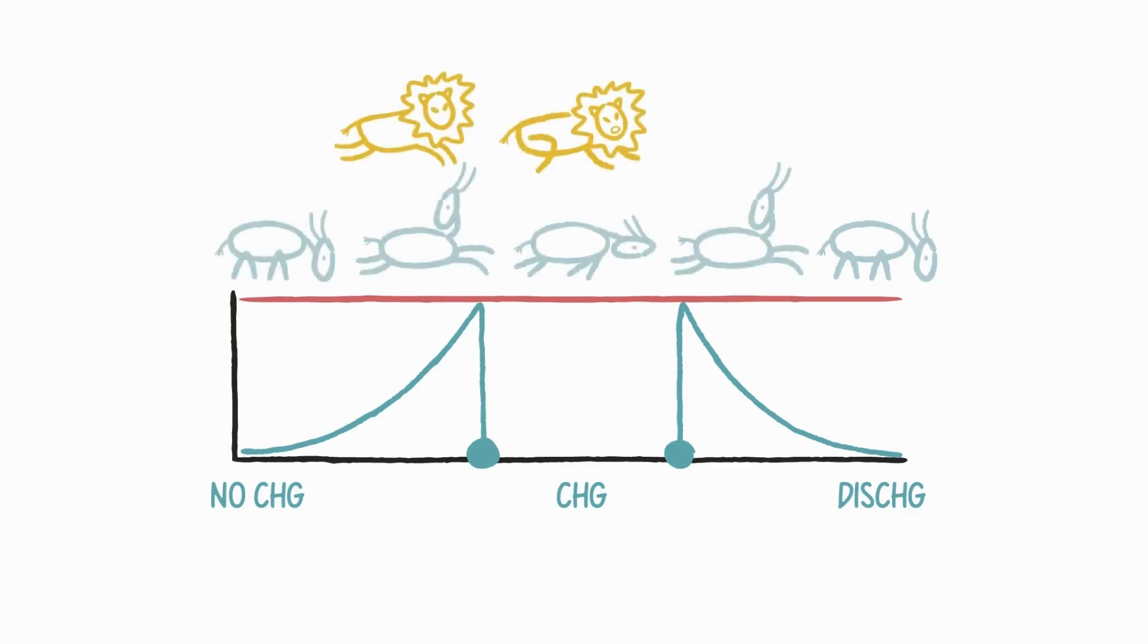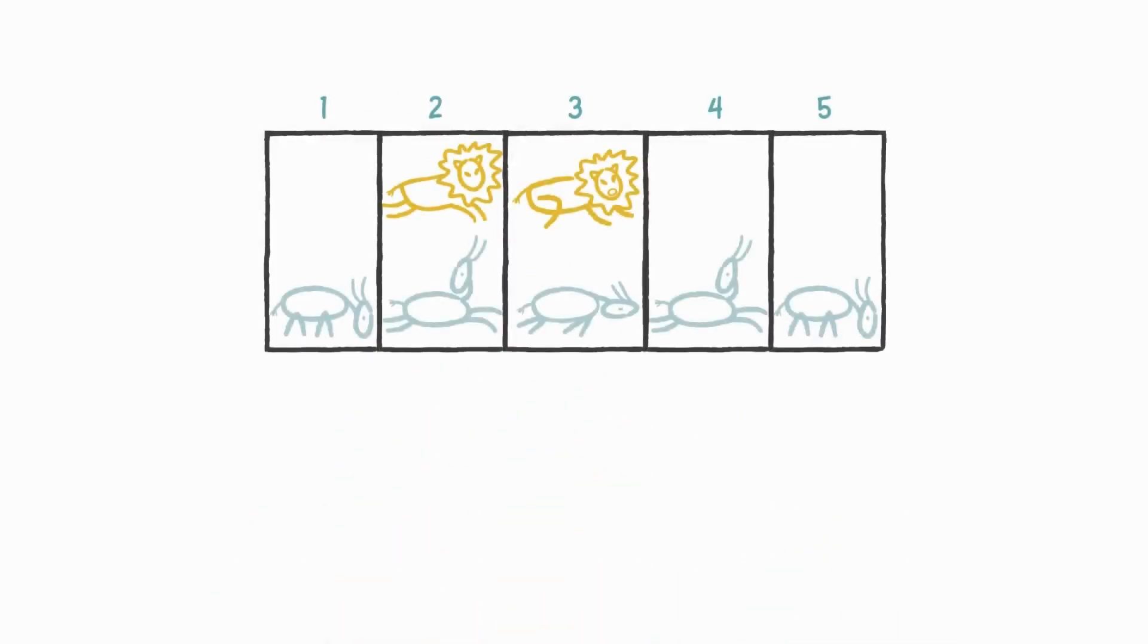But humans are different. Unlike animals who instinctively react to danger and move on, humans have a more complex process due to our more developed human brain. Imagine if the gazelle could see, think about, and analyze everything that is happening to it as it is happening.